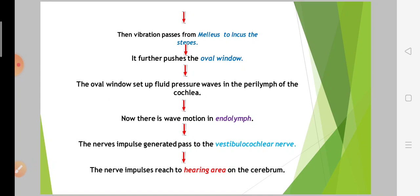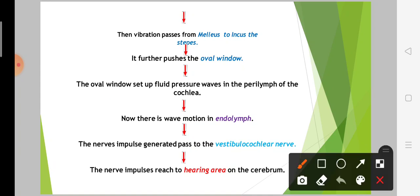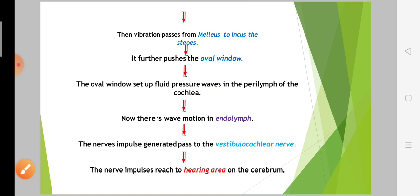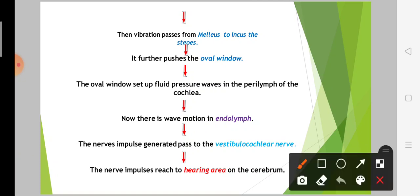In the cochlea, there is vibration in the endolymph. The nerves generate impulses to the vestibulocochlear nerve.